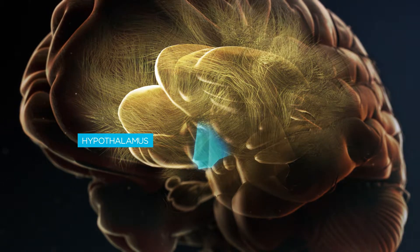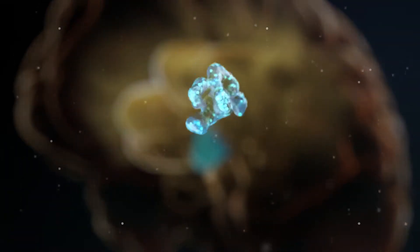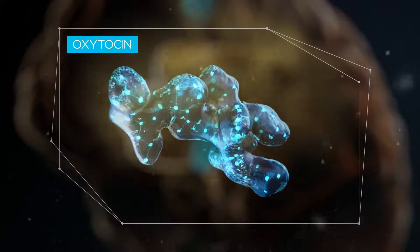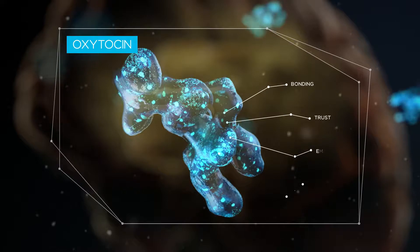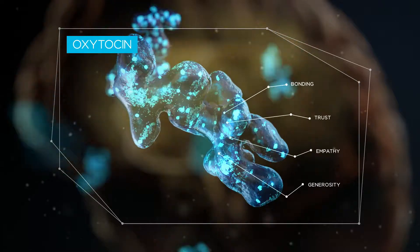Specific cells in the hypothalamus release oxytocin, a signaling molecule involved in promoting social behaviors such as bonding, trust, empathy, and generosity.